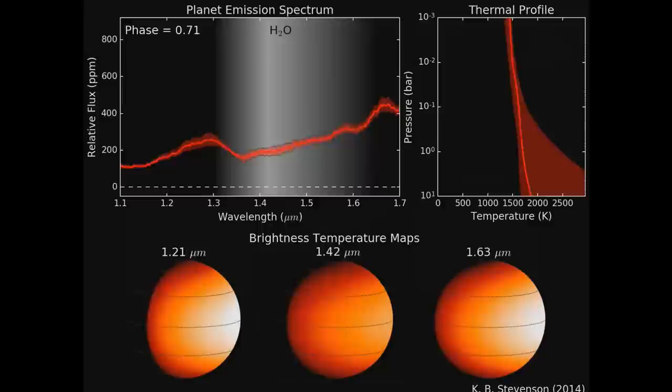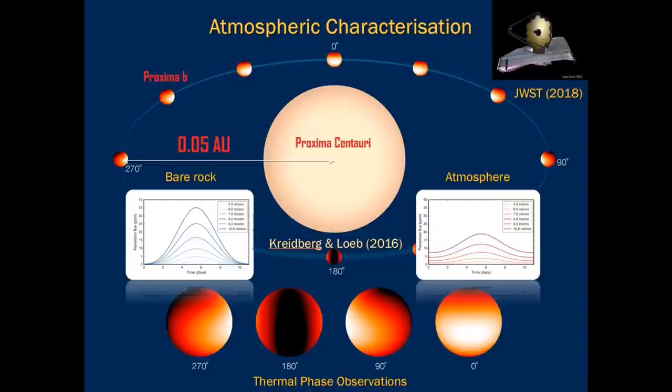If you have an atmosphere, winds will redistribute heat from the permanent day side to the permanent night side, which tends to dampen the amount of thermal radiation emitted from the day side. Contrast that with just a bare rock with no atmosphere — you'd expect to see a much warmer day side. By measuring these thermal phase curves, which you could do with James Webb, you could potentially tell whether Proxima b has an atmosphere even though it's not transiting.